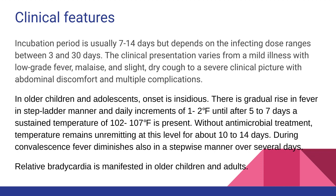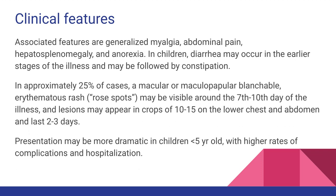Relative bradycardia is manifested in older children and adults. Normally, for every one degree rise in temperature there is an increase in pulse rate by 10 beats per minute; if the pulse rate does not increase proportionately, this is called relative bradycardia. Associated features include generalized myalgia and abdominal pain.